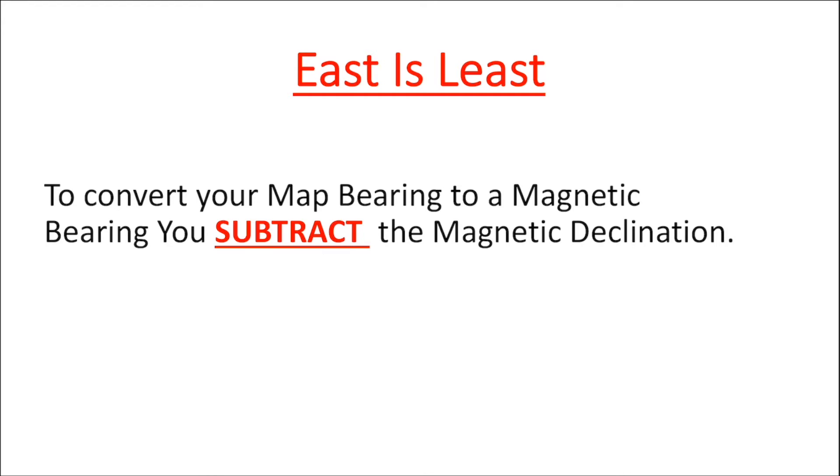So to convert your map bearing to a compass bearing, you're going to subtract the magnetic declination. East is least. That's what you need to remember. East is least. East of the declination you subtract.